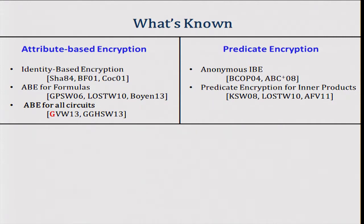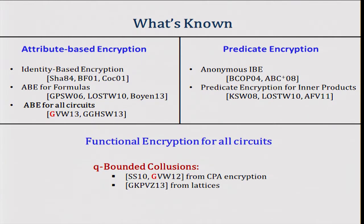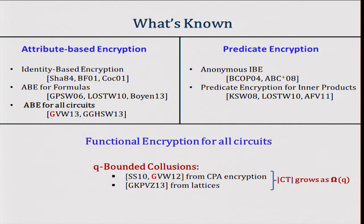What do we know for functional encryption? There are various special cases — attribute-based encryption, predicate encryption — and we can construct these from all kinds of assumptions: pairings, lattices, and so on. For functional encryption for arbitrary circuits, unfortunately not a lot. We know that for Q-bounded collusions, we can satisfy the strongest known notion of security — adaptive simulation — and you can construct it from regular CPA encryption or from lattices. In all of these constructions, the size of the ciphertext grows with the bound Q, where Q is the number of secret keys an adversary can get, fixed a priori before setup.